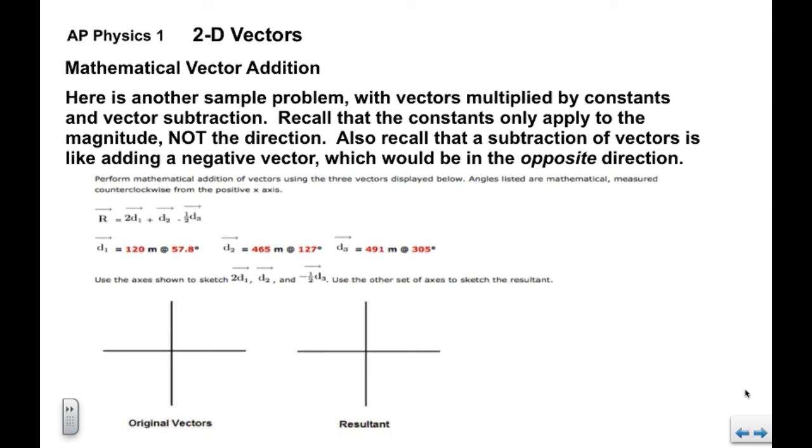Now here's another sample problem. This one has vectors multiplied by constants. We have 2d1 plus d2 and then minus one half d3. Recall that the constants only apply to the magnitude, not to the direction of the vector.